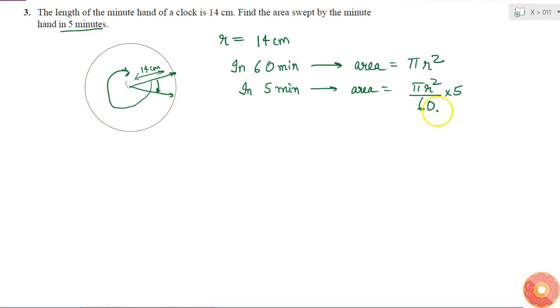So if this is a sector, the radius is 14 centimeters. If I simply put the value, then I will get area equals π, which is 22/7, times r², which is 14 times 14, times 5/60.